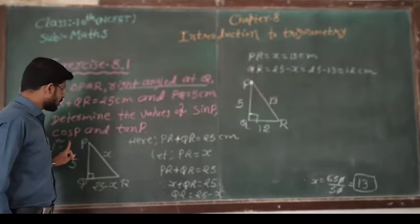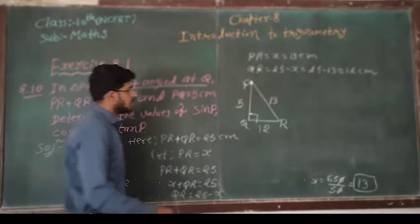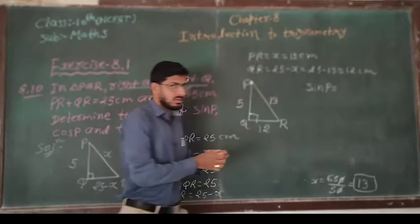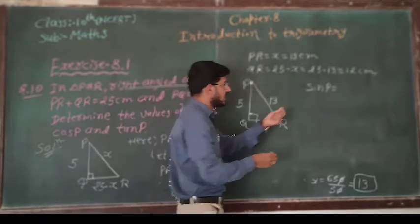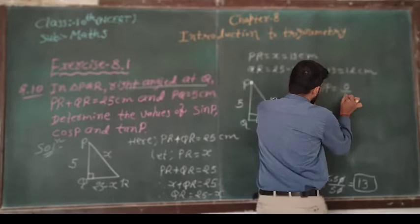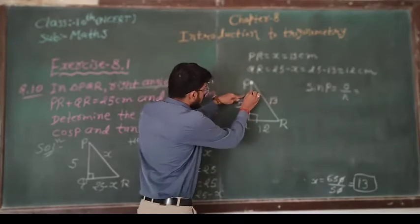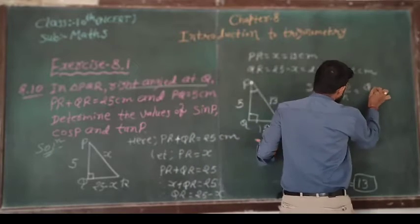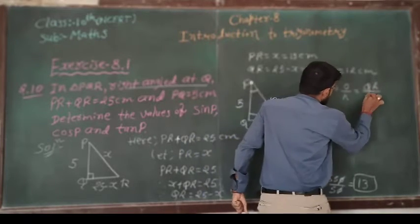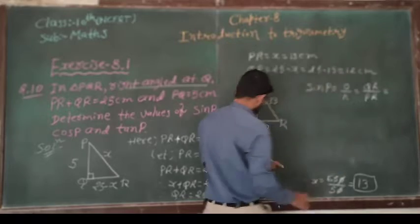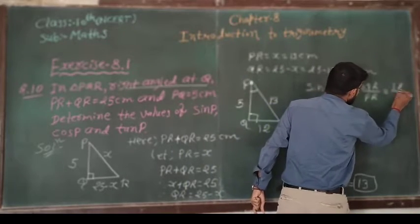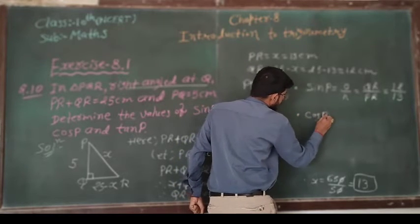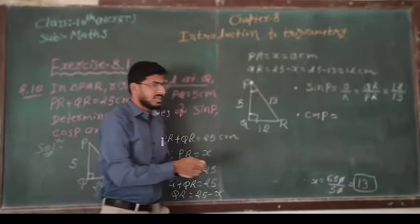Now we have to find the value of sin P, cos P and tan P. First sin P. The formula for sin is opposite side upon hypotenuse. Opposite side of angle P is QR, so QR upon hypotenuse PR, so it gives 12 by 13.